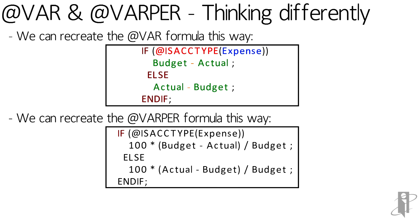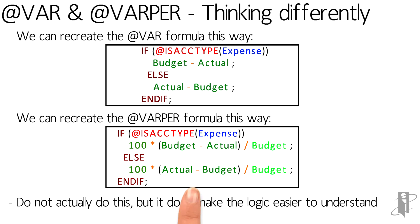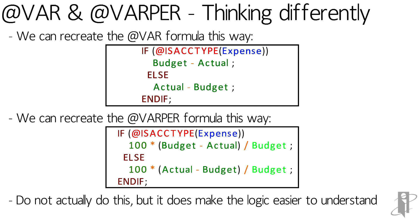The VARPER recreation is a little more complicated. We still check if it's an expense: if it is, it's (Budget minus Actual) divided by Budget times 100; if it's not an expense, it's (Actual minus Budget) divided by Budget times 100. Note that the denominator does not change — it's always Budget regardless of account type. This is the same concept you would use to recreate ATVAR and ATVARPER in an ASO application.